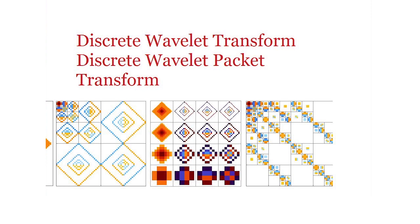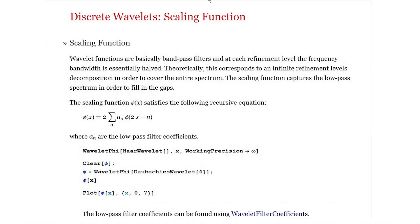Now let's focus on discrete wavelet and discrete wavelet packet transforms. In continuous wavelet transforms, scaling and translation of wavelet functions allowed us to perform the transform. In discrete wavelet transforms, we introduce the concept of a scaling function, which acts as a low-pass filter to fill the gaps in the spectrum. The scaling function follows a certain recursive relationship, where a scaling function at any instance x is dependent on scaling functions with certain translations. The coefficients aₙ here are called the low-pass filter coefficients.